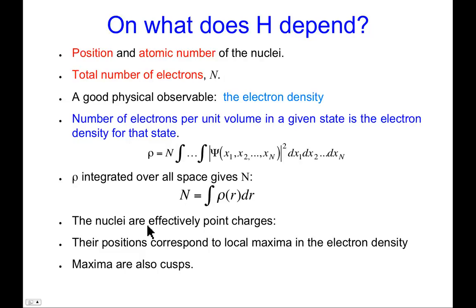So the nuclei themselves are effectively point charges. Nuclei do have volume, and actually that volume gives rise to interesting properties when you get to really heavy nuclei. But nevertheless, for practical purposes now, we consider them to be point charges. And the positions of the nuclei can be identified within the electron density, because it's at those positions you'll see local maxima in the density. Because, of course, the core electrons are centered on the nuclei.